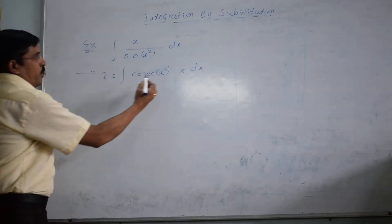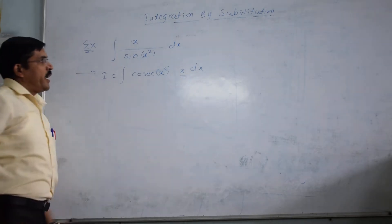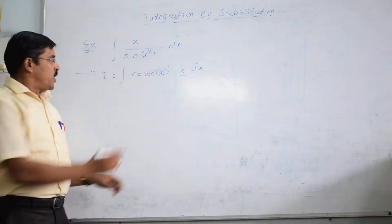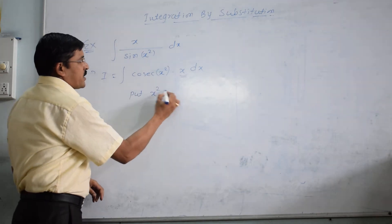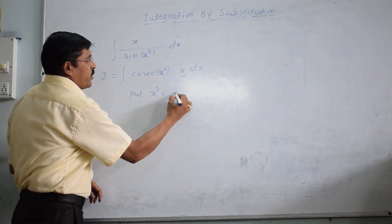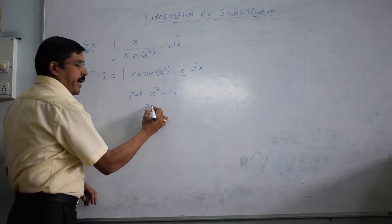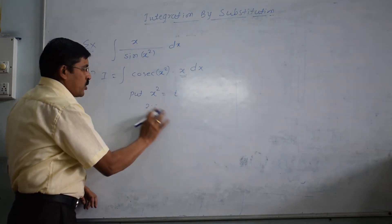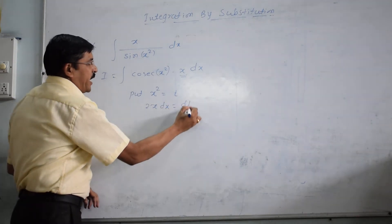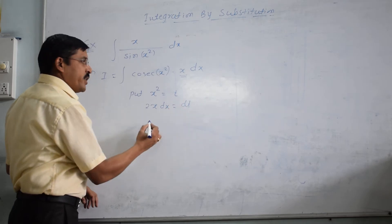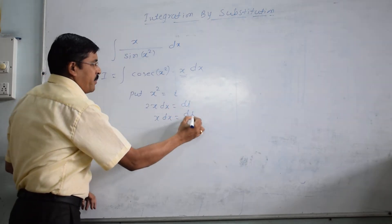Now, if you observe, x is in the derivative of x². So we can use the substitution: put x² equal to t. Then the derivative of x² is 2x dx, and the derivative of t is dt. So x dx is dt/2.